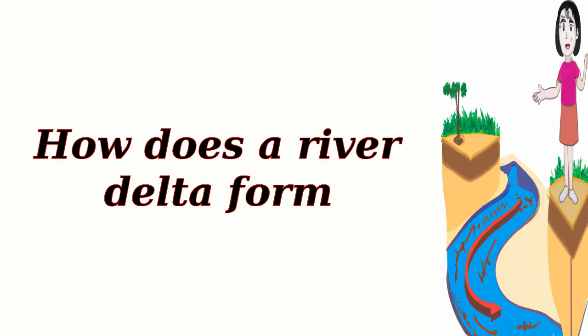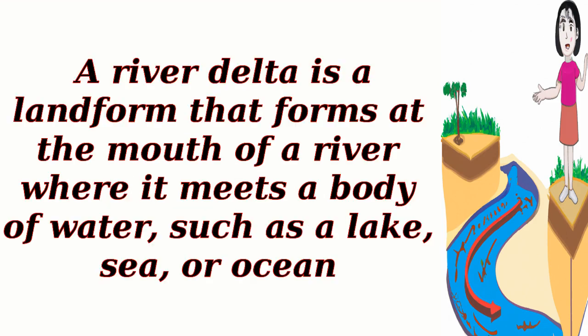How does a river delta form? A river delta is a landform that forms at the mouth of a river where it meets a body of water, such as a lake, sea, or ocean.